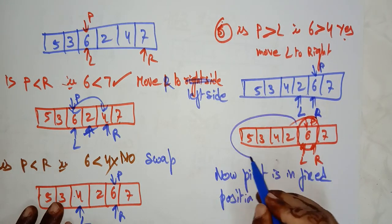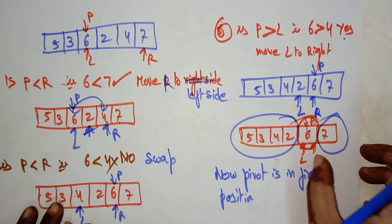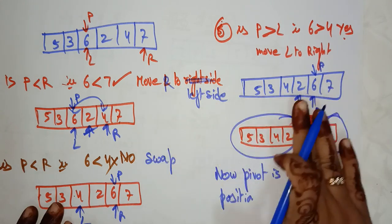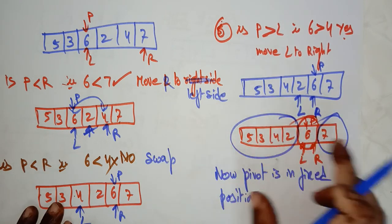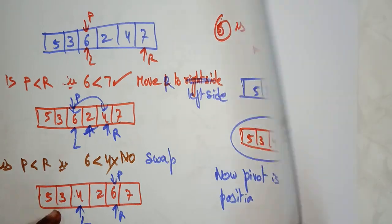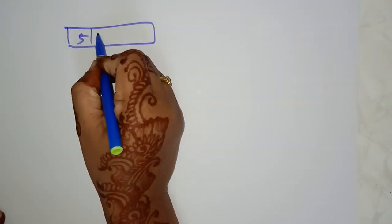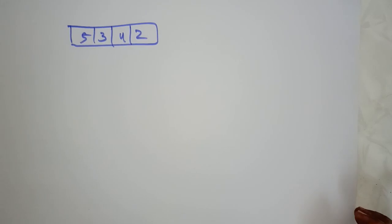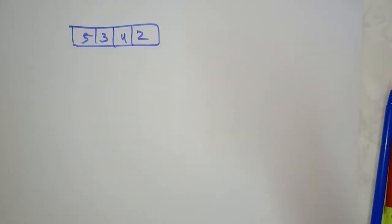Now you need to apply quicksort for the left side and the right side. The right side has only one element greater than 6, so no swap needed there. Apply quicksort for the left subarray: 5, 3, 4, 2. This is a new array — apply the same procedure. Take 5 as the pivot element, L at the start and R at the end.